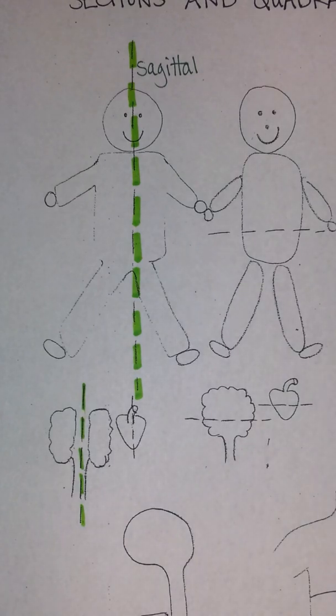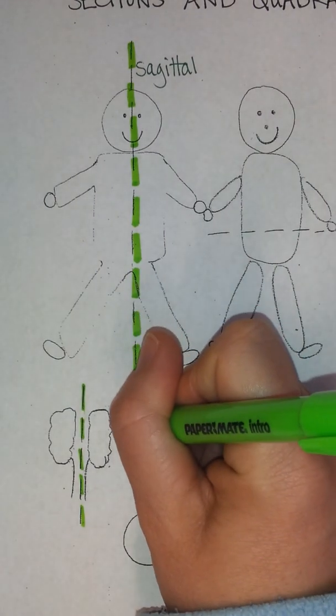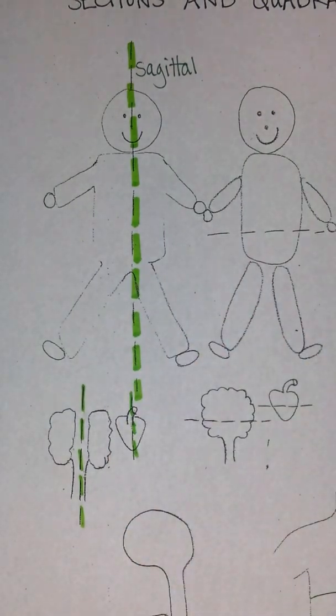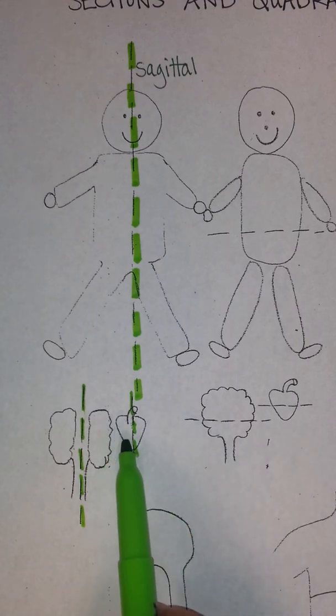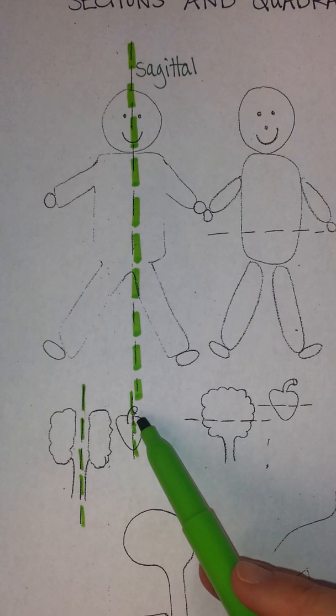If you were to divide the heart into a right and left side, either for dissection or imaging, you would end up with a right and left side. So the right atrium and the right ventricle would be on one side, and the left atrium and the left ventricle on the other side.